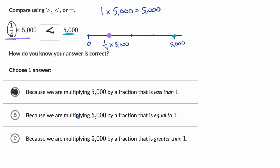Let's just read these other ones. Because we're multiplying 5,000 by a fraction that is equal to one. Well, no, one-fourth is clearly not equal to one, so we rule that one out. Because we're multiplying 5,000 by a fraction that is greater than one. Well, one-fourth is clearly not greater than one, so we rule that out as well.